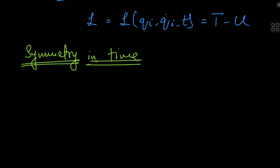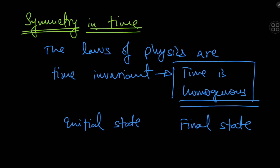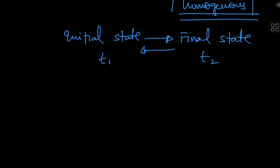In this video we're going to cover a symmetry in time, and that symmetry is that the laws of physics are time invariant — they don't change from time to time. The formal way to say this is that time is homogeneous: different instances of time are equivalent in the eyes of the laws of physics. This may seem trivial, but it has far-reaching implications. Given a system's initial state at time t₁, we can figure out its final state at t₂, and it works both ways — the laws of physics apply the same way regardless of the direction of time.